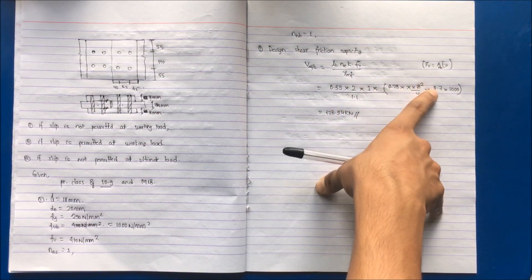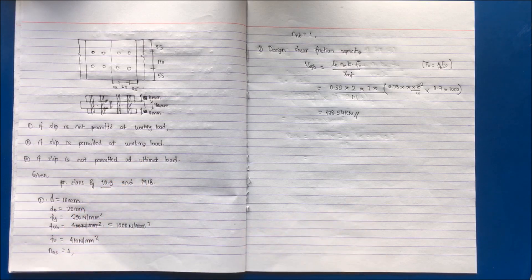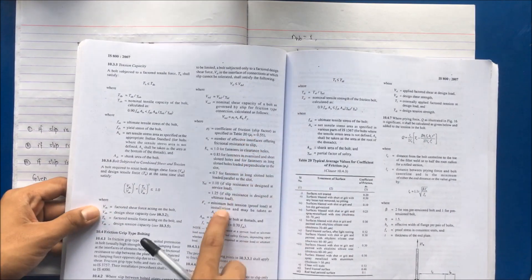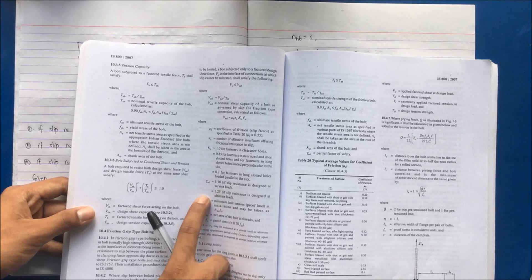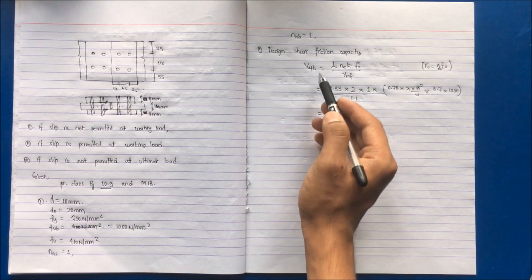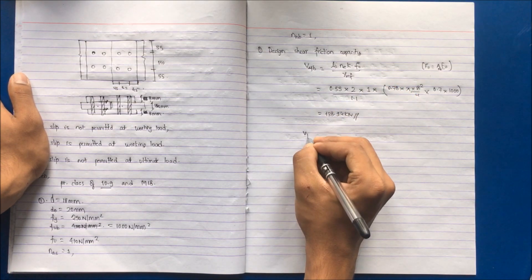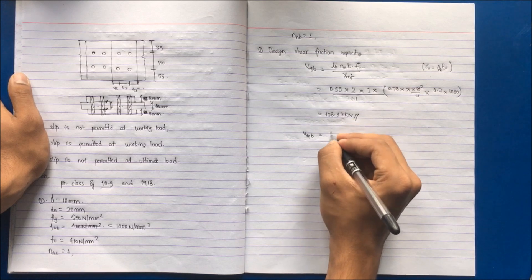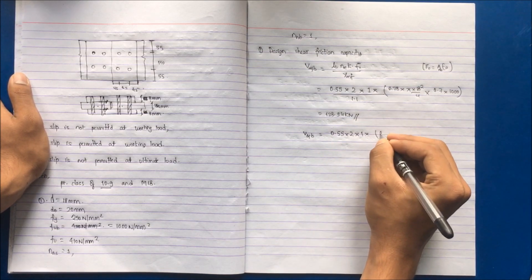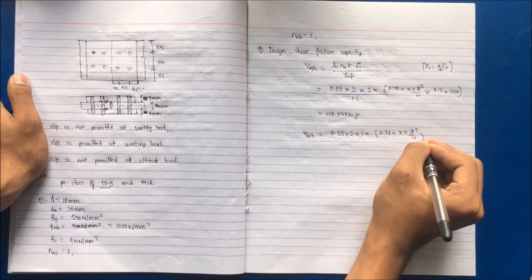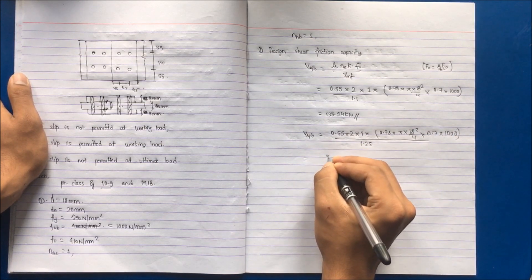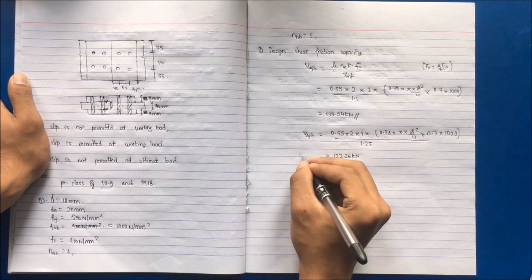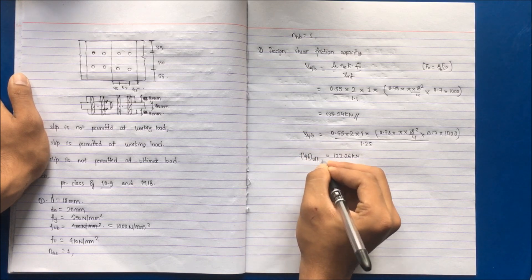Similarly, the question gives both working load and ultimate load cases. γMF = 1.10 when slip resistance is designed at service load (working load). For ultimate load, we divide by 1.25 instead. So VDFB for ultimate load = 0.55 × 2 × 1 × 0.78 × π × 18² / 4 × 70% of FUB / 1.25, which comes to 122.26 kN.